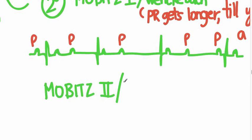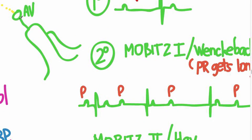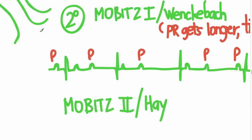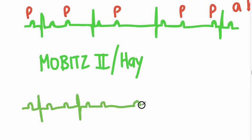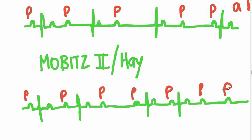The next one is Mobitz II, sometimes called the Hay block. This usually takes place not in the AV node but in the bundle of His. You do drop beats, but unlike Mobitz I, the PR interval does not get progressively larger. Instead you have two normally conducted beats, then you drop the third — two normally conducted beats, drop the third. This is worrisome because it rapidly progresses to third-degree heart block, so the patient will likely need a pacer.